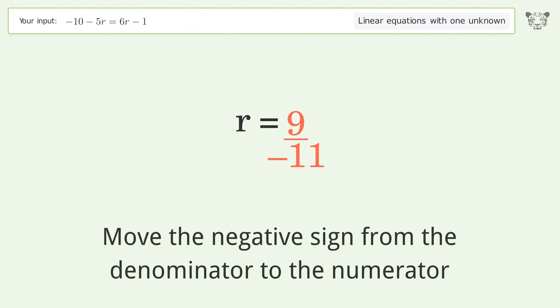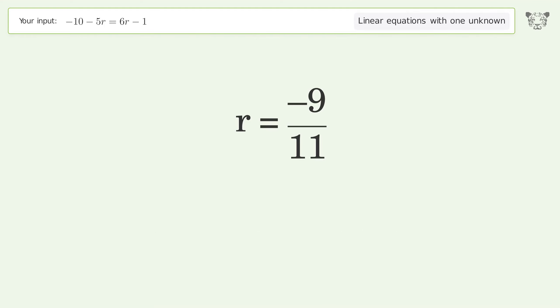Move the negative sign from the denominator to the numerator. And so the final result is r equals negative 9 over 11.